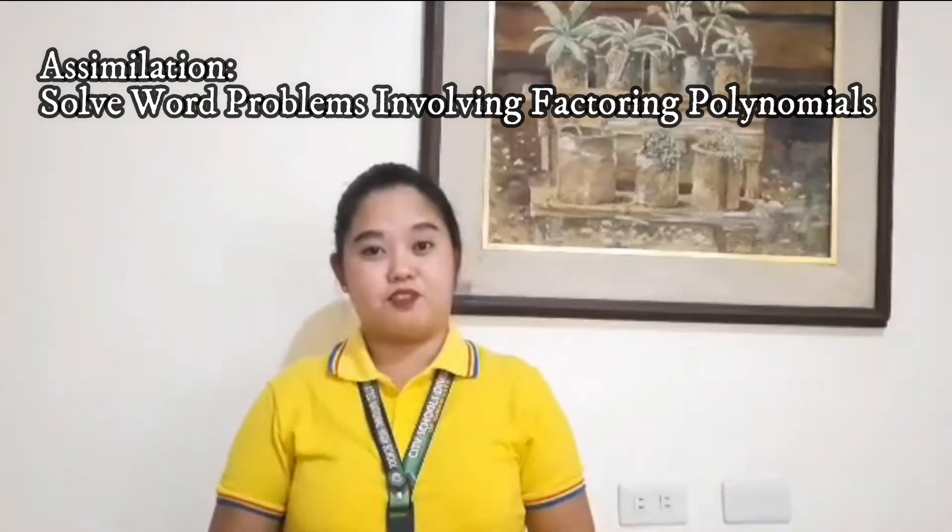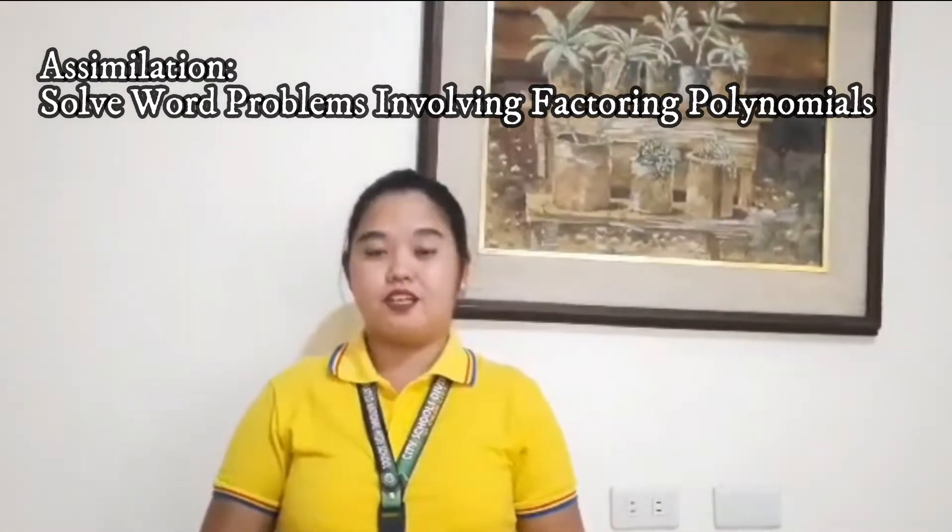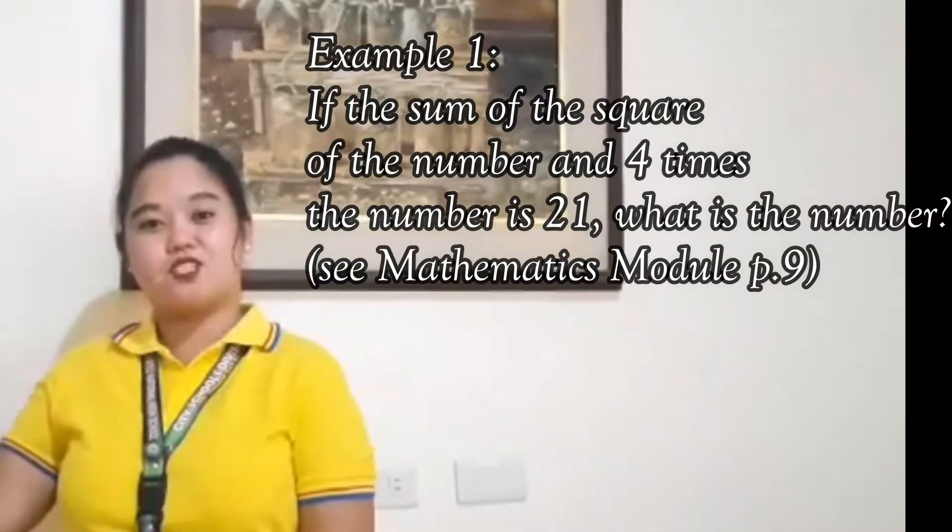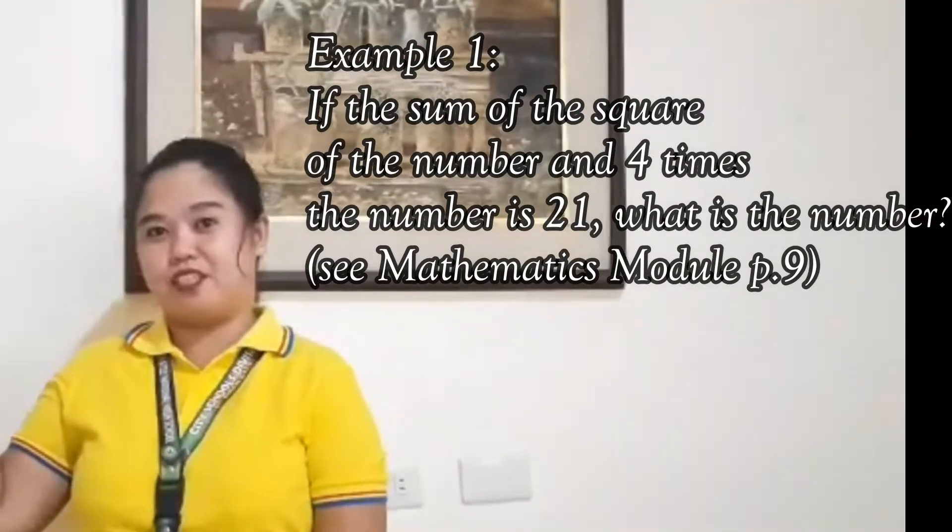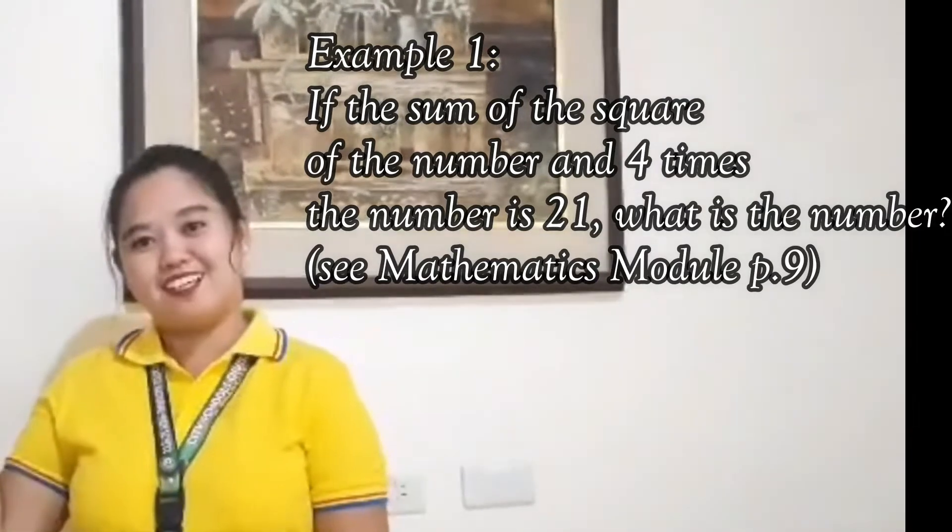Today, we will solve problems involving factoring of polynomials under learning task number 5. So let's proceed to our example. Example number 1: If the sum of the square of the number and 4 times the number is 21, what is the number?